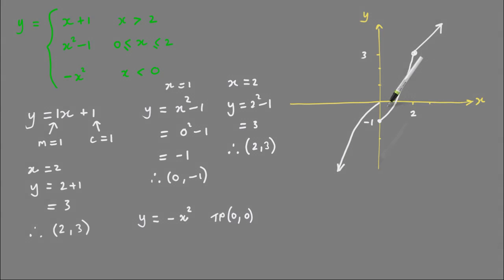Checking the domain for that upside-down parabola, x is less than 0 but not equal to it, so at that turning point, that needs to be an open circle as well.